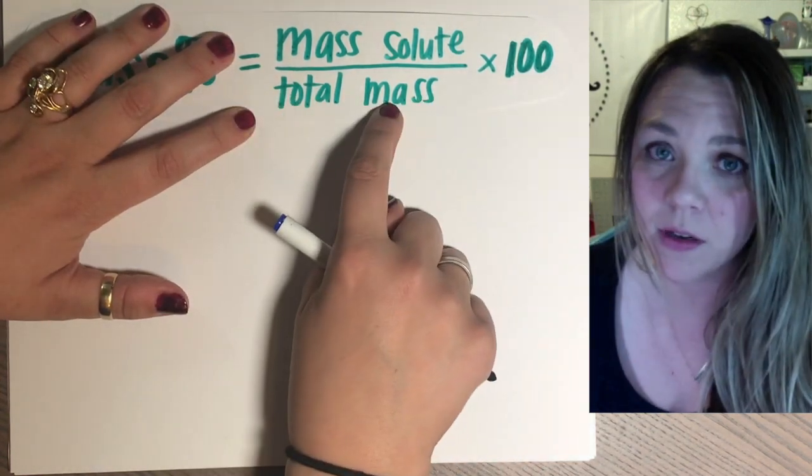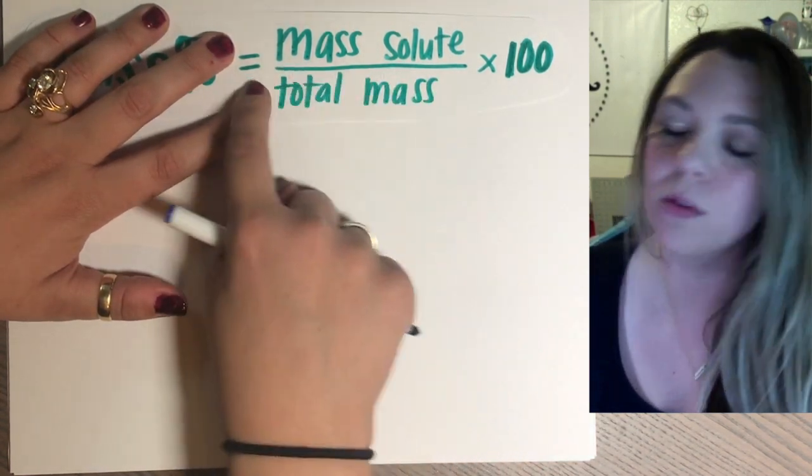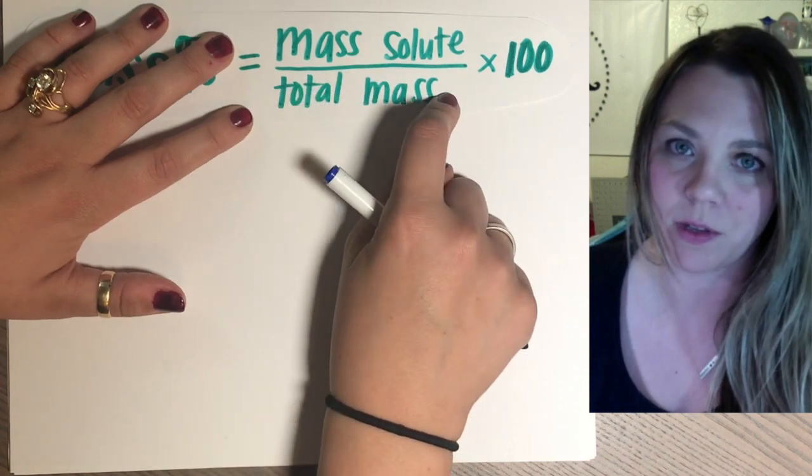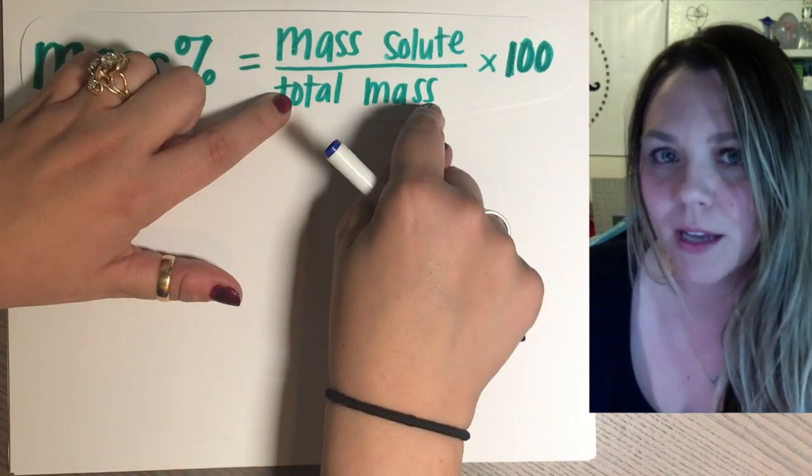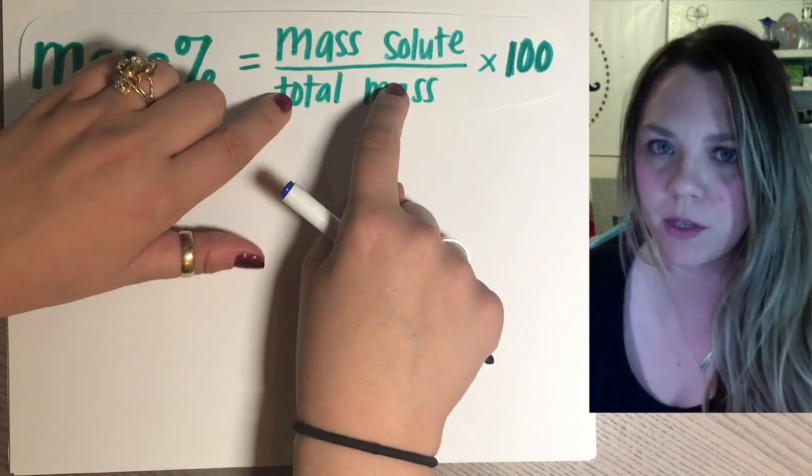Okay, the total mass part is really the only thing that gets screwed up in these problems. So just be aware that total mass means mass of solute plus mass of solvent. You need both of them in your total.